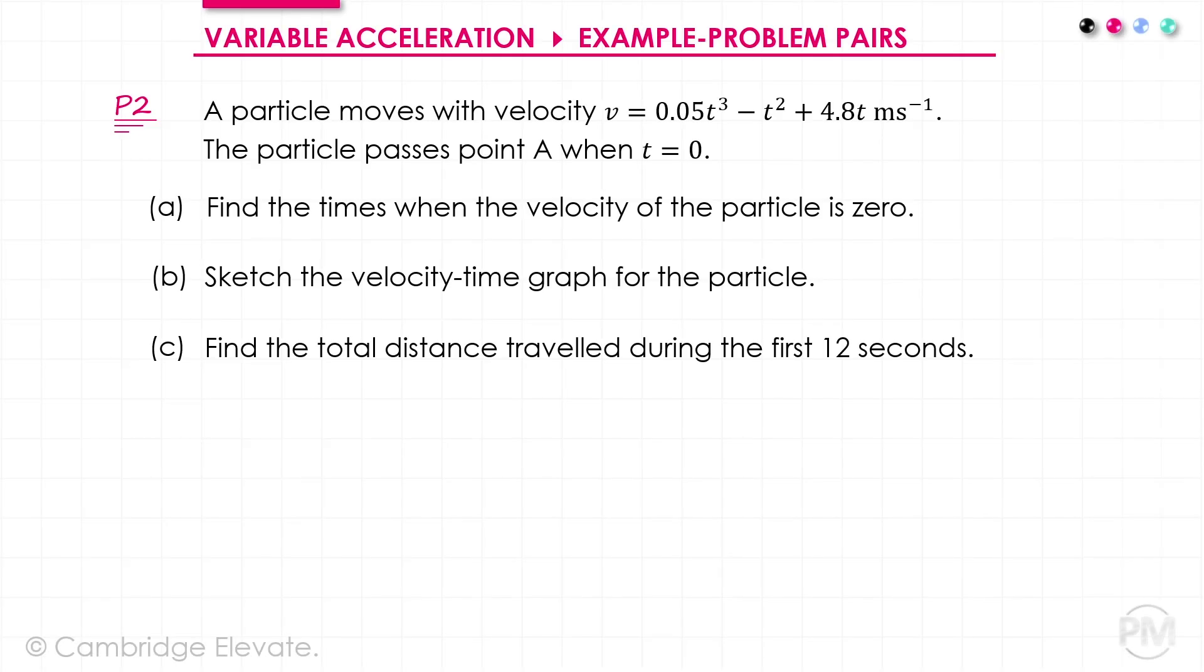Problem P2 is of roughly the same difficulty as the one I've just done. I'd like you to pause the video for a second, have a go at it, and then come back and check your solution against mine. Let's attempt P2 then. We've got a particle moving with the velocity shown, and it passes point A when t equals 0. And we want to, first of all, find the times when the velocity of the particle is 0.